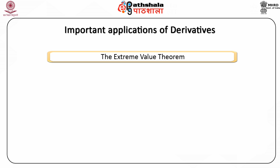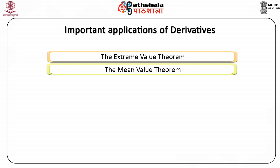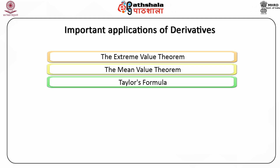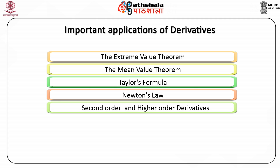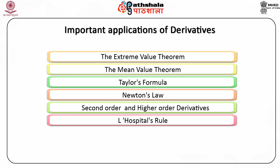The extreme value theorem determines the maximum and the minimum value of a continuous function in a given interval. The mean value theorem is used to find a point C belonging to the continuous interval AB where the tangent at F(C) is equal to the slope of the interval. Taylor's formula is considered as one of the main results in mathematical analysis. Newton's law is used to compute the n-th root of different numbers. Second order and higher order derivatives are used to determine whether a function is concave or convex. Cost functions are used to derive the average and the marginal cost. L'Hôpital's rule is a standard method for the systematic treatment of indeterminate forms.